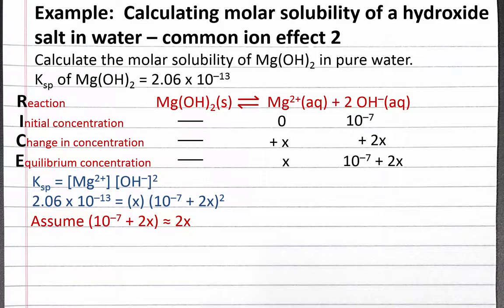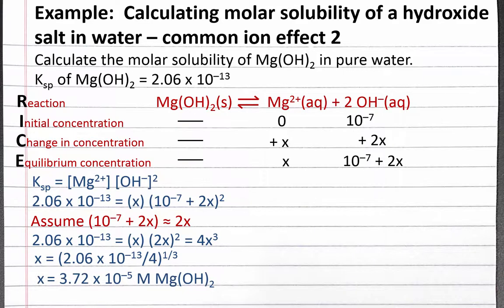If 10 to the negative 7 is small compared to 2x, then we can replace 10 to the negative 7 plus 2x with just 2x in our equilibrium constant expression. The right side of the equation simplifies to 4x cubed. To solve for x, we divide both sides by 4 and then take the result to the 1 third power. Completing the calculation, x equals 3.72 times 10 to the negative 5 molar magnesium hydroxide.